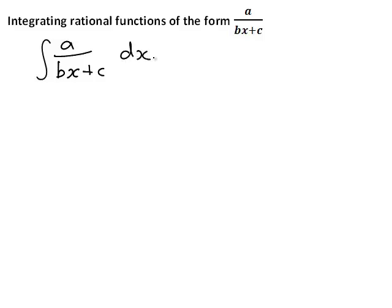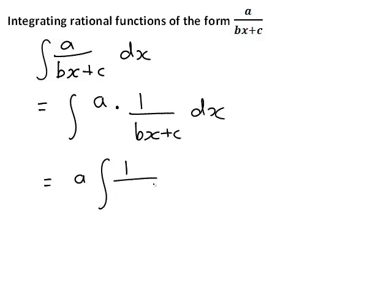Now because a is a constant that could be taken outside the integral sign, this is effectively the integral of a multiplied by 1 divided by bx plus c dx. So we can simply rewrite it in this form. Now integrating 1 divided by bx plus c.